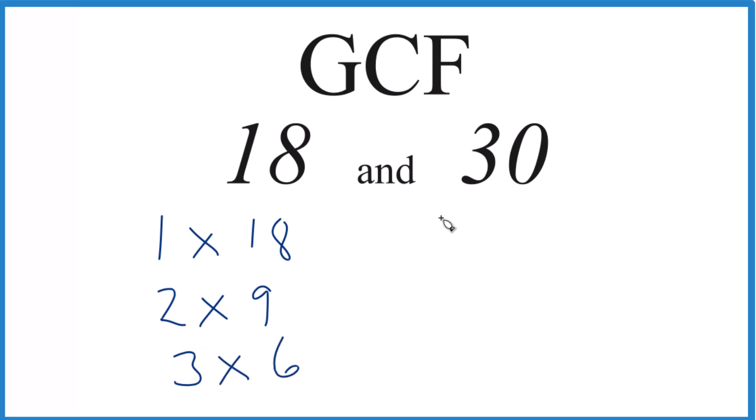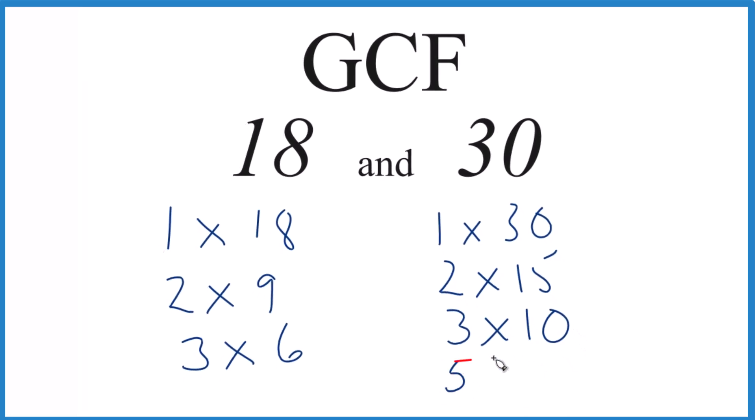For 30, we have 1 times 30, 2 times 15, 3 times 10, that equals 30, and 5 times 6. So these are all the factors for 18 and 30.